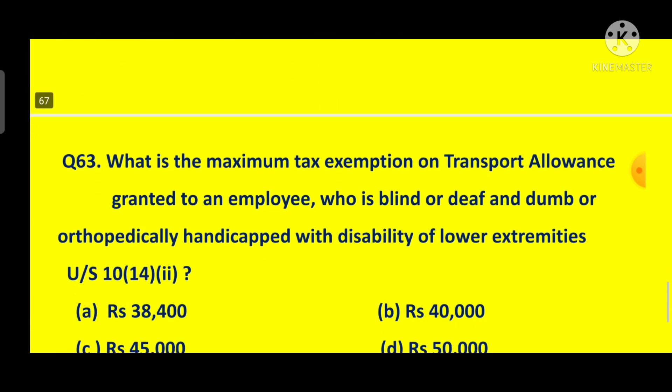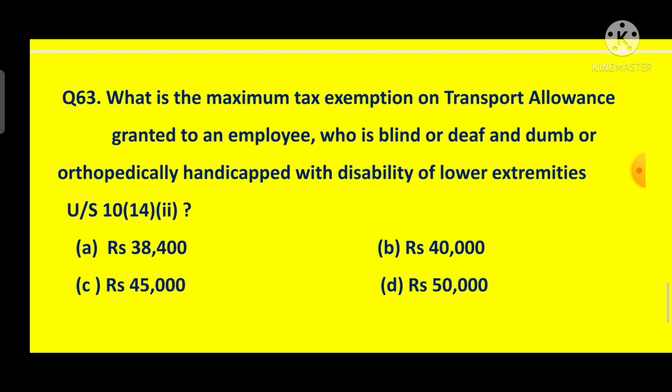Question No. 63: What is the maximum tax exemption on transport allowance granted to an employee who is blind, deaf and dumb, or orthopedically handicapped with disability of lower extremities? Transport allowance is for commuting from residence to office and back.